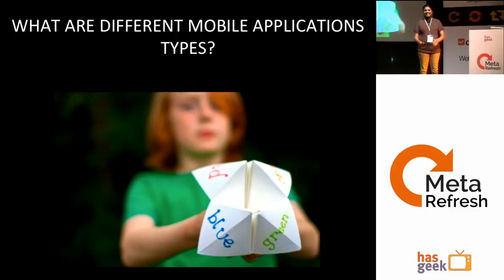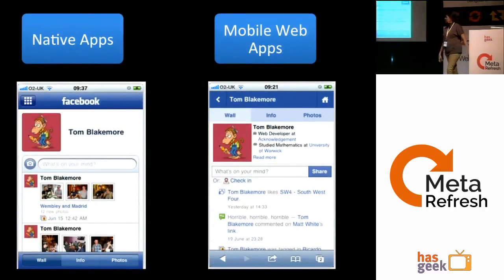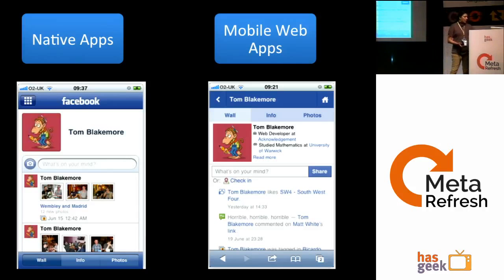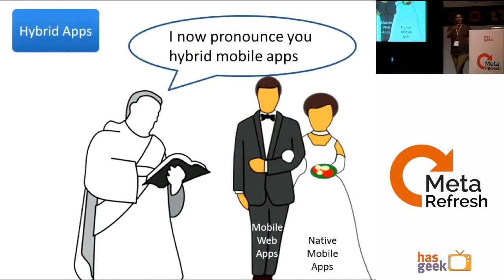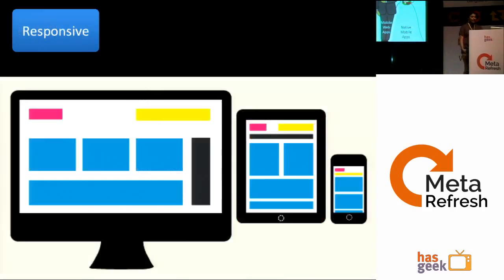The different categories of applications are: native applications, which are device-specific — iOS, Android — downloaded from respective marketplaces; mobile web applications, which are HTML-based and run on mobile browsers; hybrid applications, which combine features of mobile and native; and responsive applications. So there are four different types.